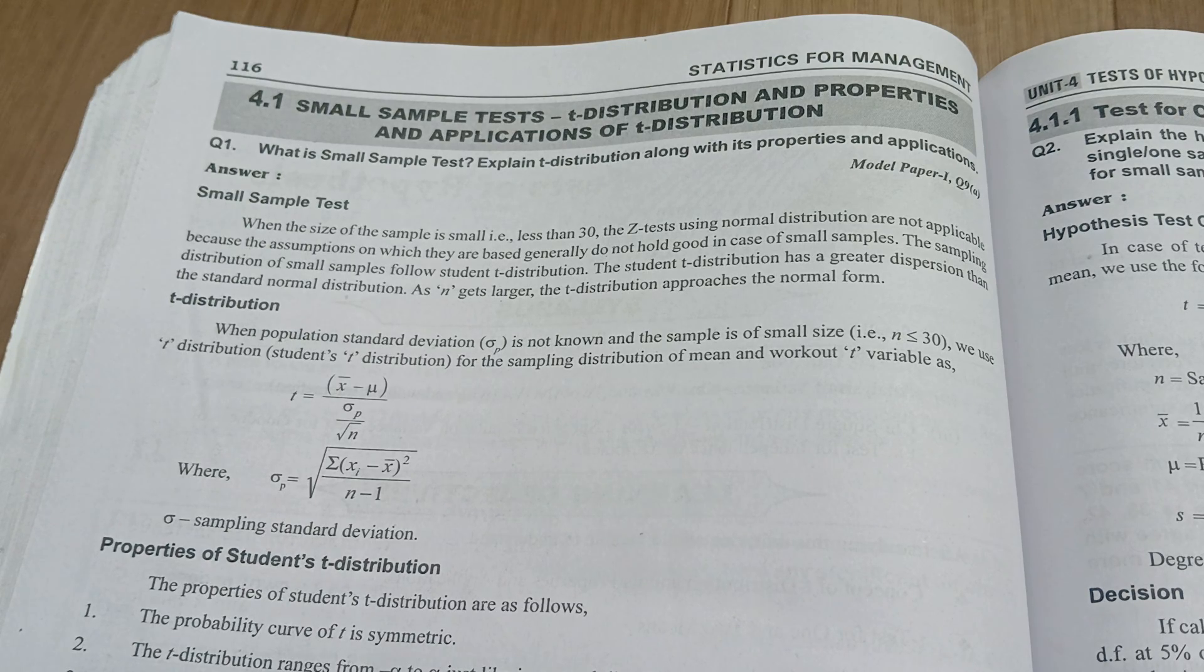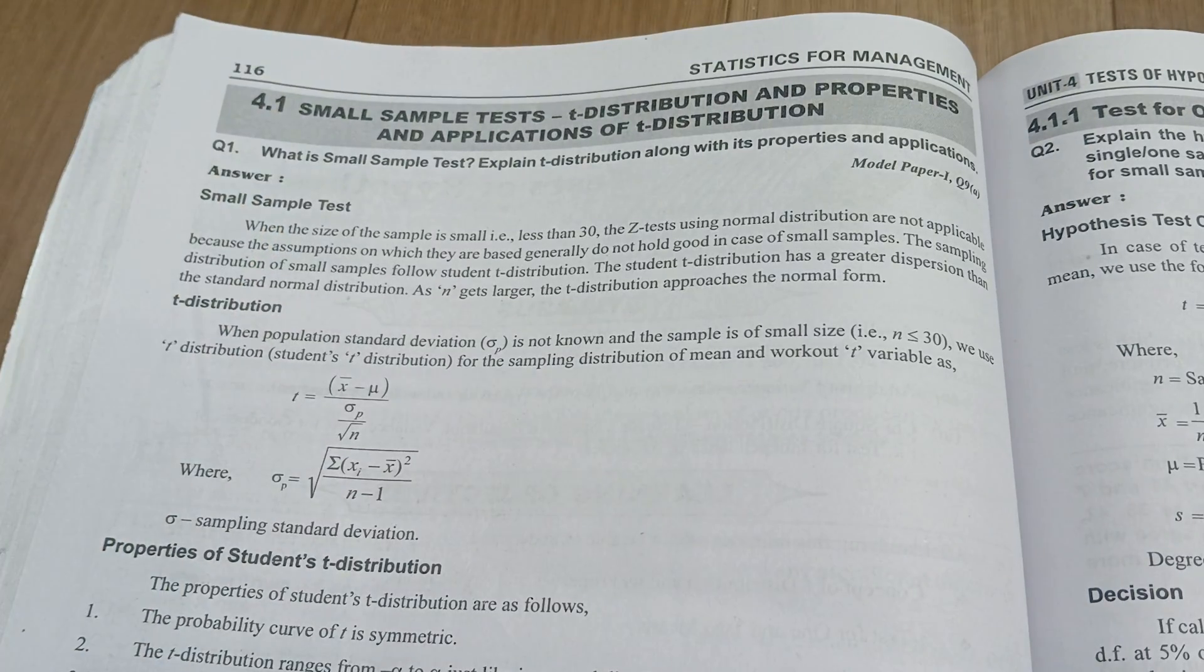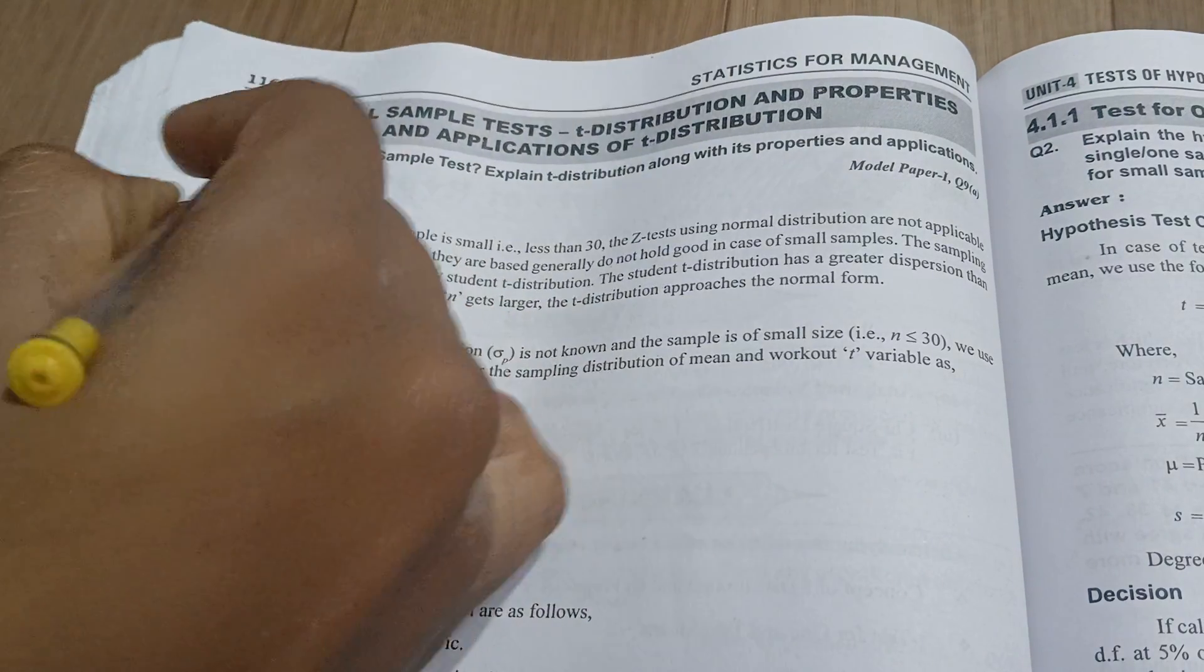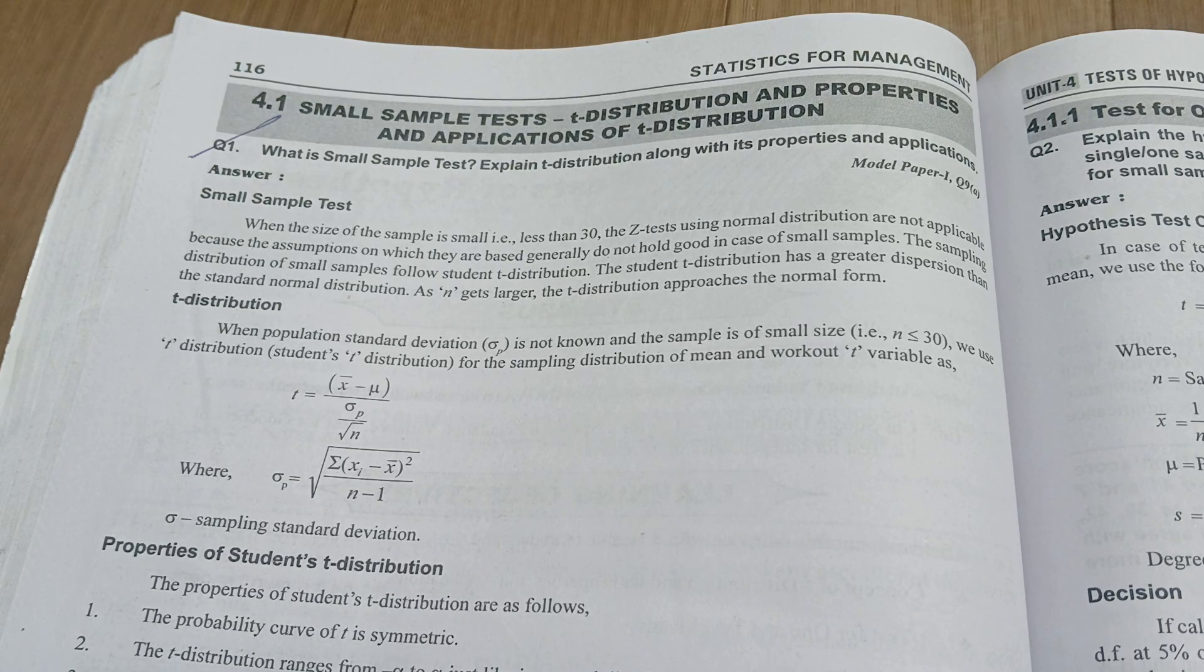...and what are the various t-distributions are there. These questions they have asked the properties and assumptions also. Small sample test is nothing about less than 30 - less than 30 data whatever we are having, that we can call it as a small sample test. It is the z-test whatever we are using.